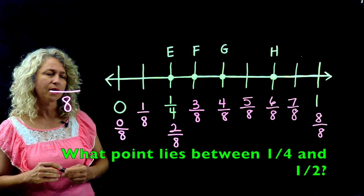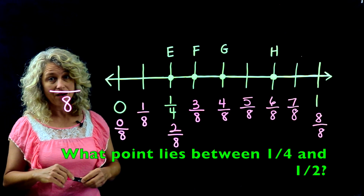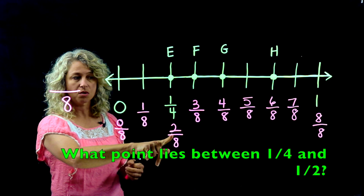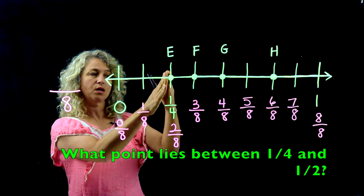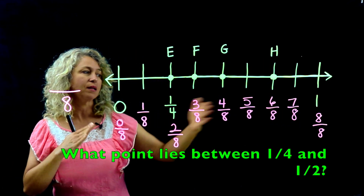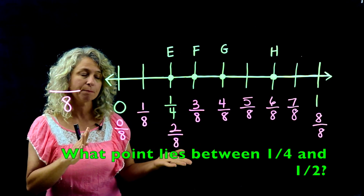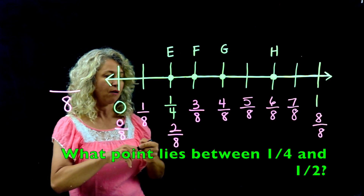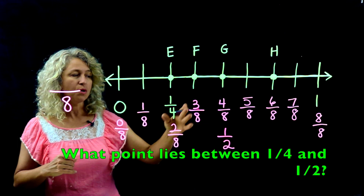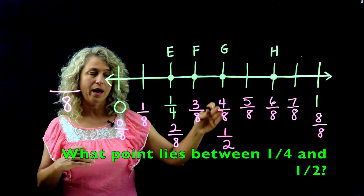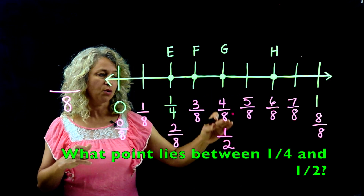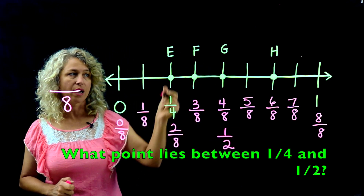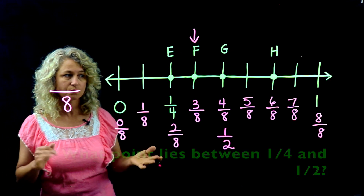Question: what point lies between one fourth and one half? We have one fourth right here. We need to find one half, but it's not labeled directly — so which fraction means the same thing as one half? Four eighths is equivalent to one half: four divided by four is one, eight divided by four is two. So here's one fourth, here's one half — what lies between? It's point F. That's your answer.